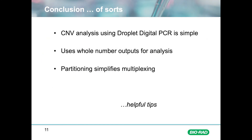In conclusion, Droplet Digital PCR simplifies the process of copy number variation analysis by providing very accurate gene counts. The output is numerical and this greatly simplifies the calculation process. Additionally, multiplexing is easy and accurate due to the partitioning of the reaction into thousands of sub-reactions. This reduces competition for reaction resources and allows amplification of both targets unimpeded by one another.